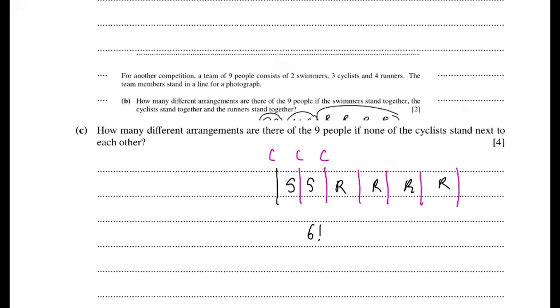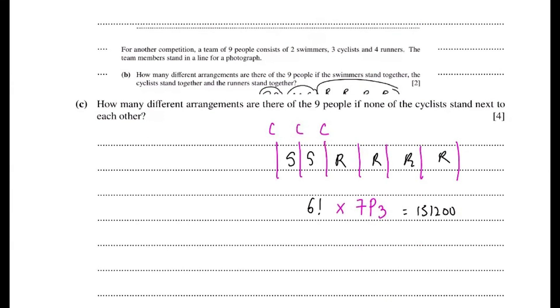Cyclist will be, this one will be multiplied with 7C3, because you got seven space for three cyclists. No need to divide by three factorial because cyclist is three different people, it's human. Human is different, it's not the same alphabet. Even though I write C. 7P3 times 6 factorial. So the answer will be 151,200. So I have four marks already. They're very nice to you, they didn't ask you very complicated questions.